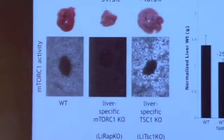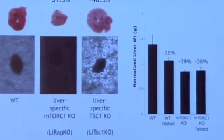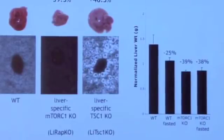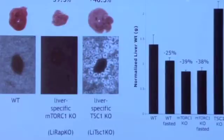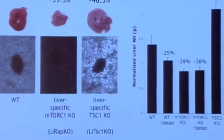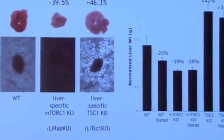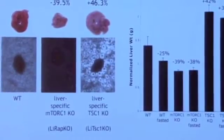If you fast a mouse overnight, it'll lose about 25% of its liver mass; a two-day fast, about 40%. When we inhibited mTORC1, there's no further decrease in the size of this liver, indicating that in response to these nutritional cues, this liver is as small as it's going to get. Conversely, when we constitutively activate this pathway, there's a resistance to these anti-size effects of fasting — this is really an active autophagy-driven degrowth of the liver.